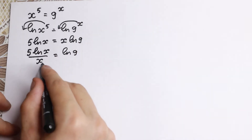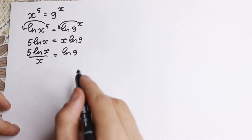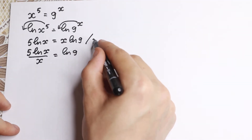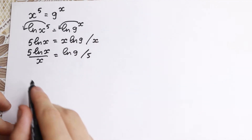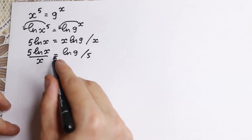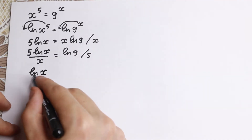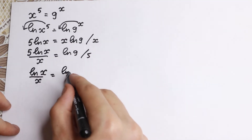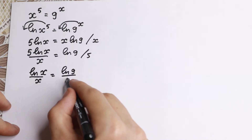Right here we have variables, and right here we have a constant. So now we divide both sides by 5 — from the left we cancel the 5, and we arrive at: natural log x over x equal to natural log 9 over 5.